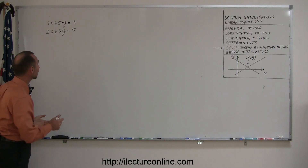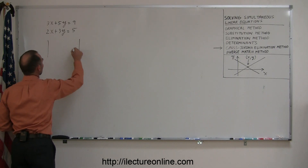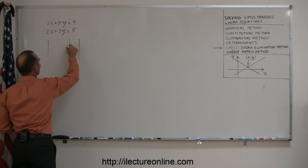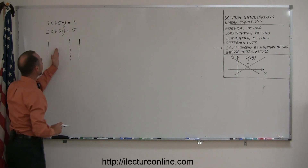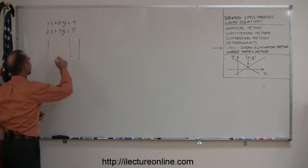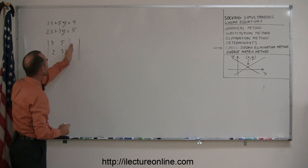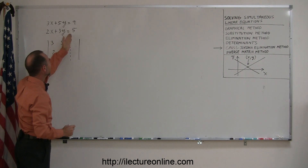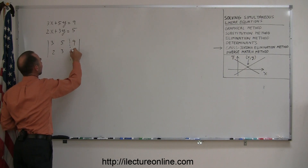The next thing you do is draw something that looks kind of like a determinant with a little dashed line in between. To the left of the dashed line you put in the coefficients of the x and the y — so this is a 3, a 5, a 2, and a 3. And to the right of the dashed line you put in the two constants, 9 and 5.